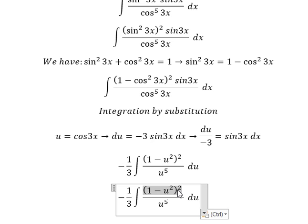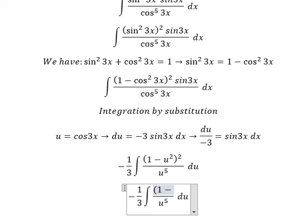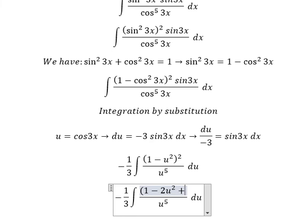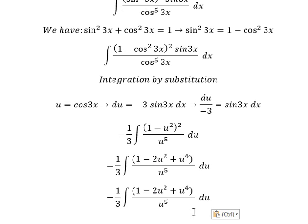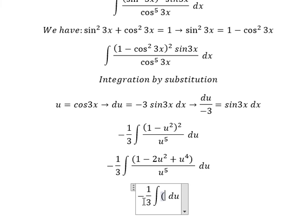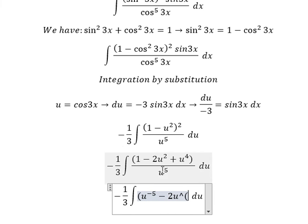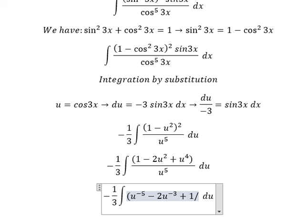Now we need to expand this one: 1 divided by u^5, minus u^2 divided by u^5. This gives us u^-5 - 2u^-3, because 2 minus 5 gives negative 3, and we have 1 over u.